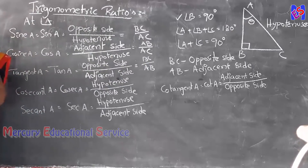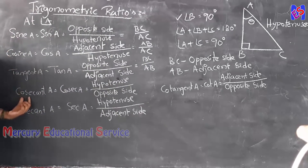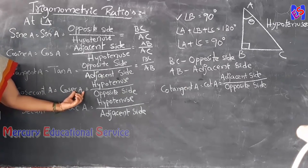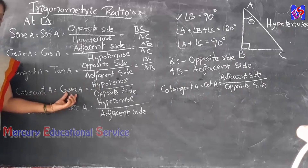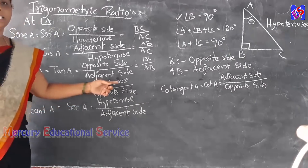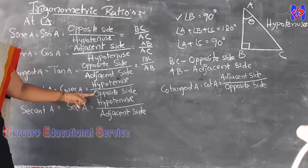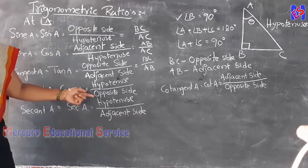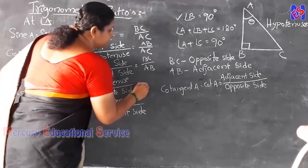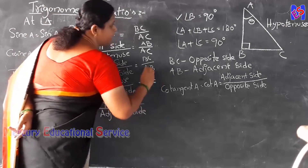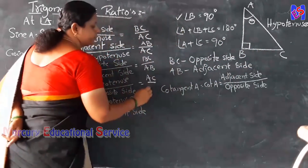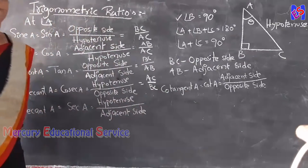Fourth ratio: cosecant A. The formula of cosecant A is hypotenuse divided by opposite side. The hypotenuse is AC and the opposite side is BC. So cosecant A equals AC by BC.